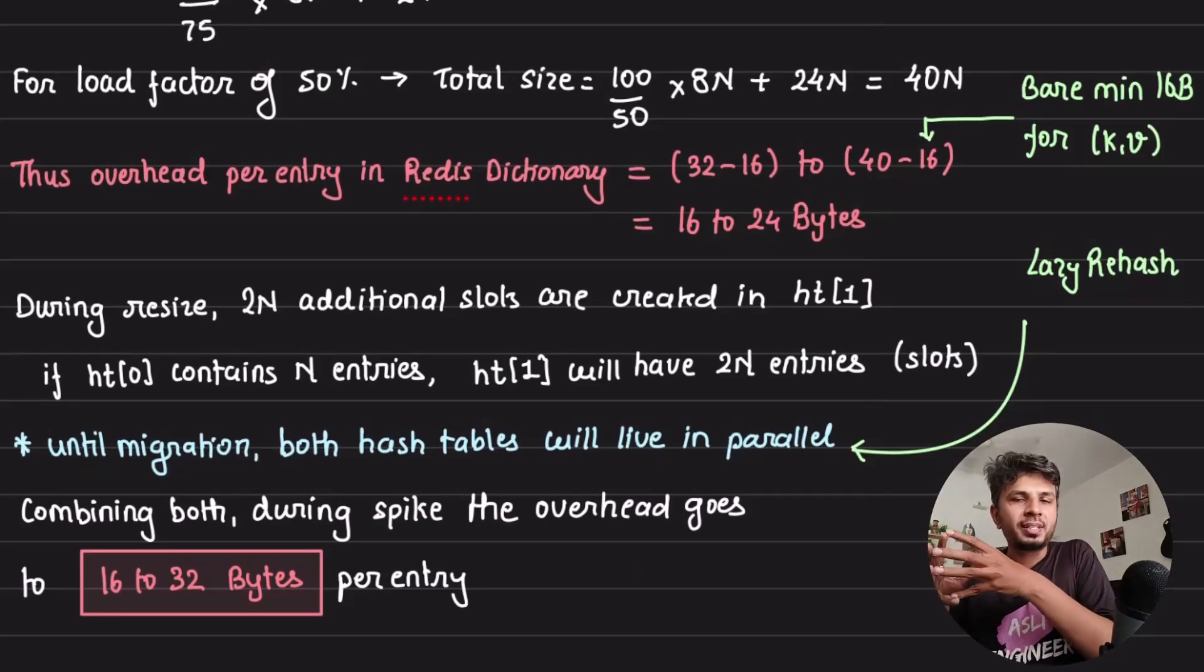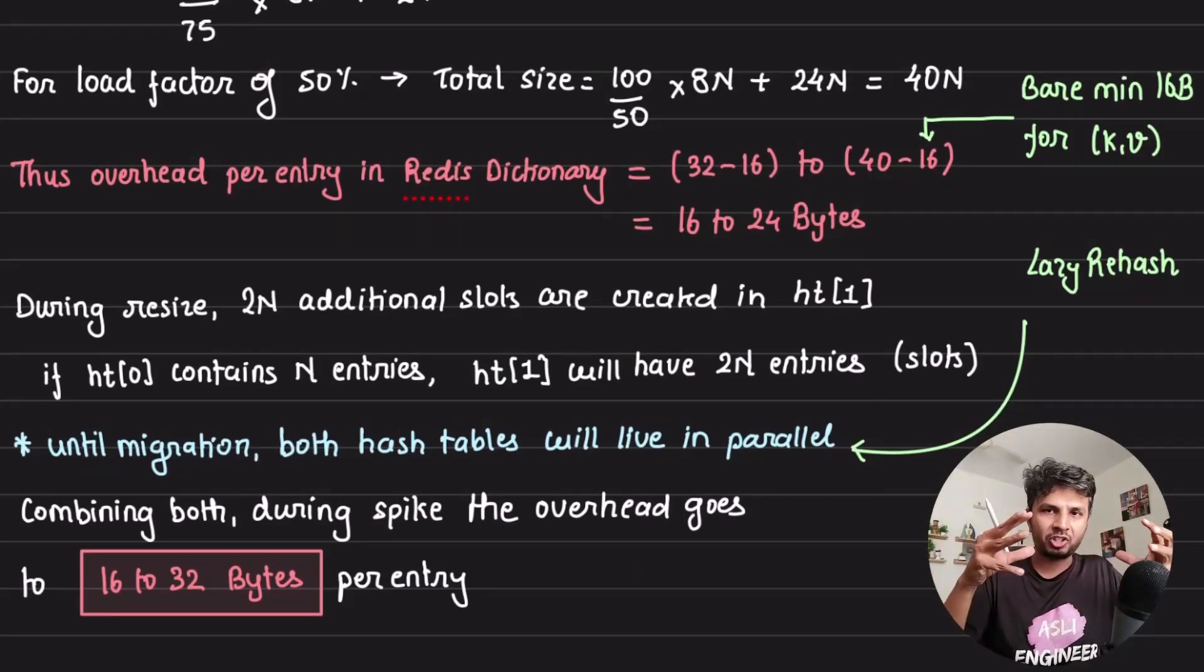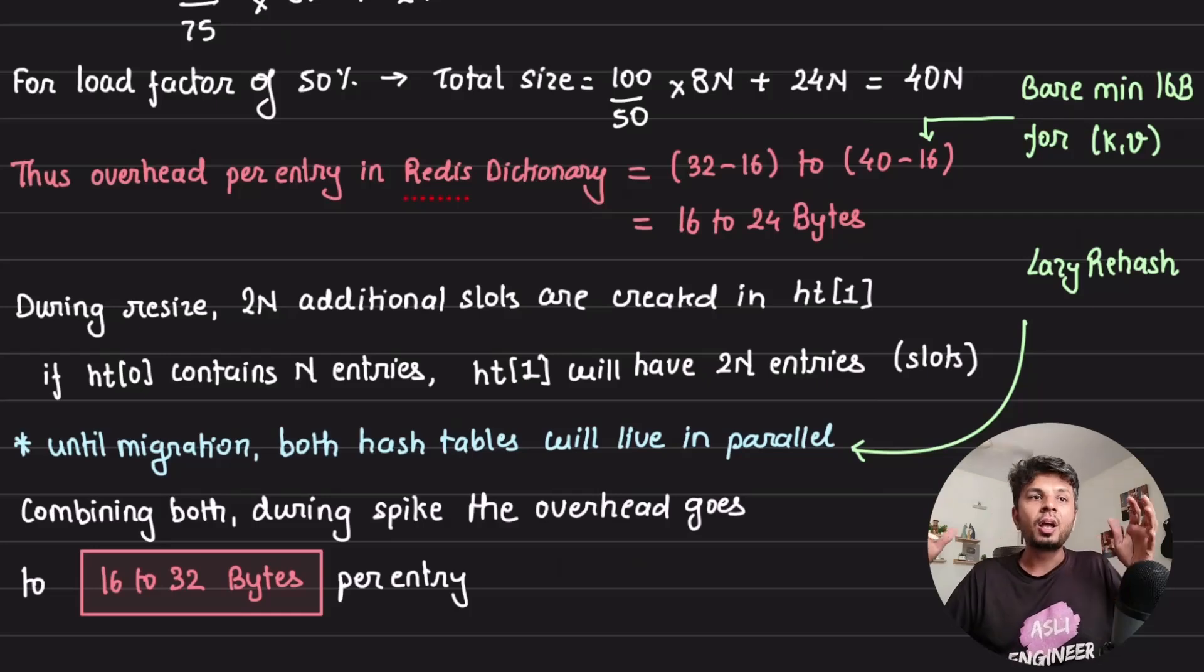Now during resize, what happens is obviously when we are resizing a hash table, because this array is not enough, I would have to resize it. I would have to create more entries, creating one more hash table of that size and rehashing it over there. So my overhead for that becomes 16 to 32 bytes, which is pretty huge.